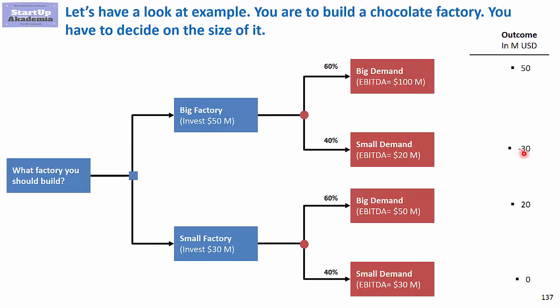We will be 30 million less because the cost of the factory is 50 million whereas the EBITDA will be just 20 million, so we will not be able to cover all the investment costs.